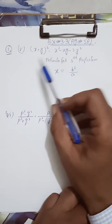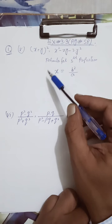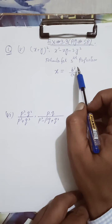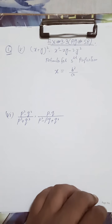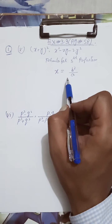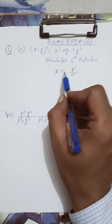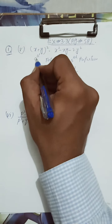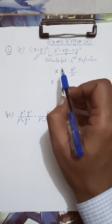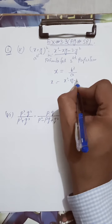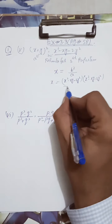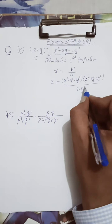Okay students, Exercise 3.3, page number 58, question number one, part number five and six. You have to find the value of the third proportion. You have to find the second value of x squared minus xy minus 2y squared, divided by x plus y whole squared.